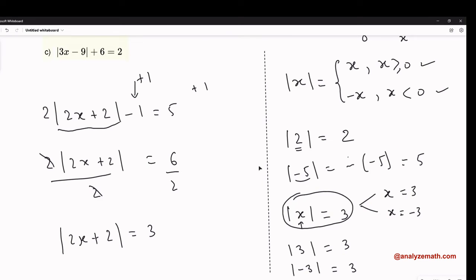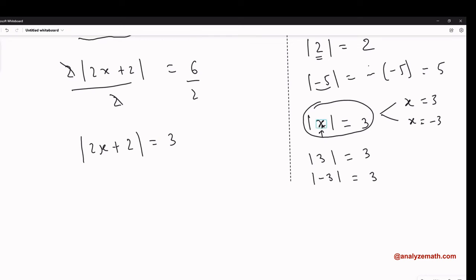What did we say when solving the simple equation |x| = 3? We said x equals 3 or x equals negative 3. It's the same thing here: either this expression equals 3 or the same expression equals negative 3.